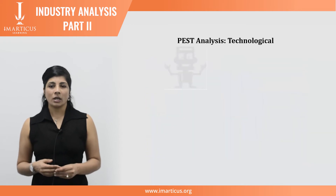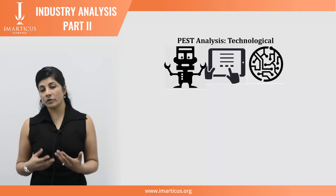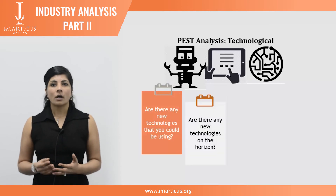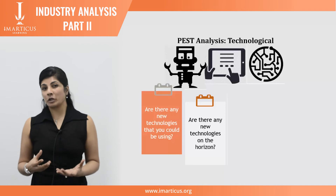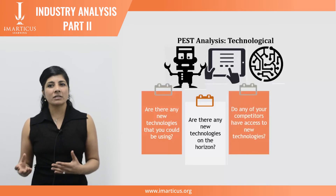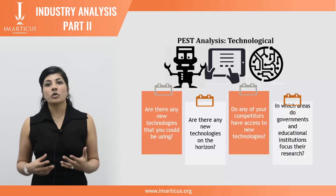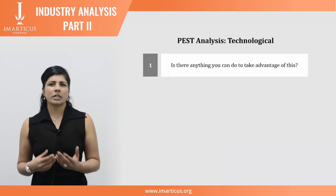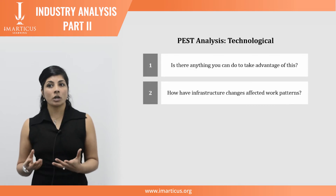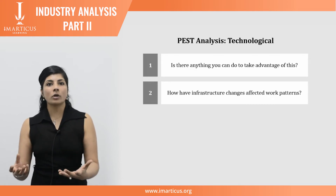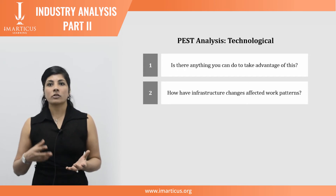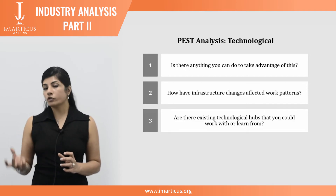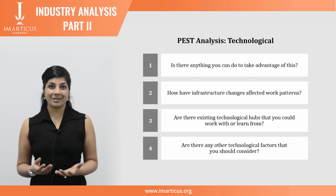Finally, there's technology — something companies are increasingly aware of but still tend to miss. Ask yourself: are there any new technologies you could be using? Are there technologies on the horizon that could radically affect your work or industry? Do competitors have access to new technology that could redefine their products? In which areas do governments and educational institutions focus their research, and can you take advantage of this? How have infrastructure changes affected work patterns — for example, does a new country's infrastructure impact remote working? Are there existing technological hubs you could work in or learn from? Consider factors like robotics.